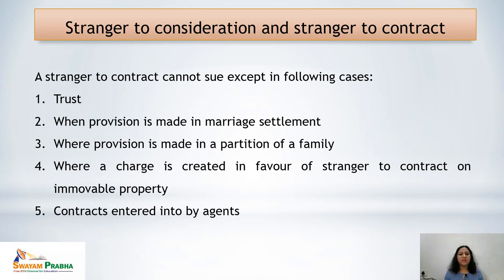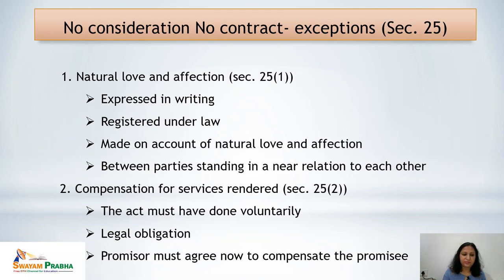Further exceptions include: where a charge is created in favor of a stranger to contract on immovable property, the stranger can sue as a beneficiary. Also, in contracts entered into by agents — where the principal is a stranger to the contract but the agent works on the principal's behalf — if something goes wrong the principal can sue for the pending amount.